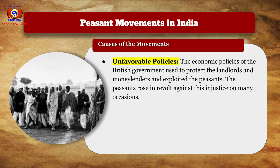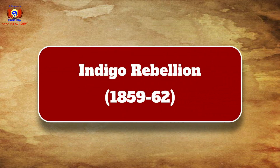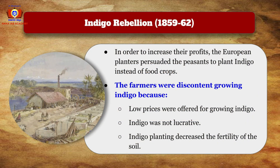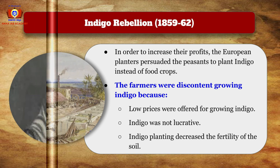The peasants rose in revolt against injustice on many occasions. One such revolt was seen in 1859 to 1862, known as the Indigo Revolt. In order to increase their profits, the European planters persuaded the peasants to plant indigo instead of food crops. The farmers were discontent growing indigo because low prices were offered, the crop was not lucrative, and planting indigo decreased the fertility of the soil.